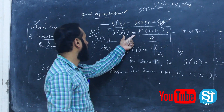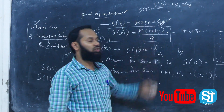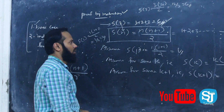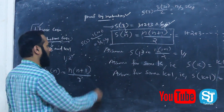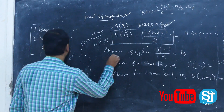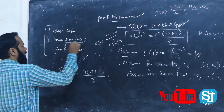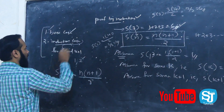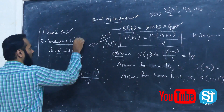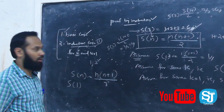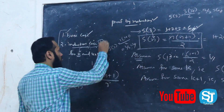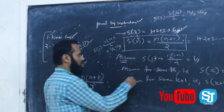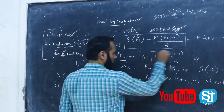This sequence is correct. We can prove that. If we assume the case satisfies the first condition, the value is 1. So we can prove that 1 into 1 plus 1 by 2 gives the correct answer.